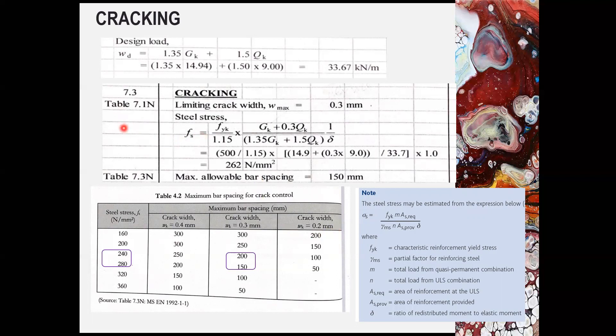So if you look at the equations here, this equation also multiplied by delta. This delta is the moment redistribution in your case. In this case, there is no moment redistribution. Therefore, delta is 1. So now we have obtained the steel stress FS, which is 262.